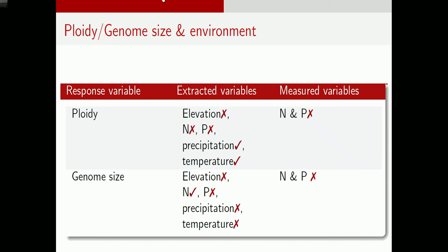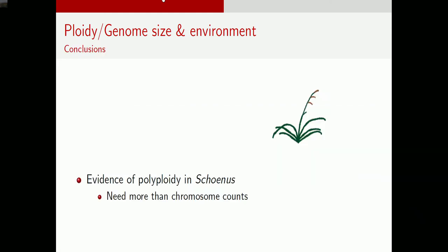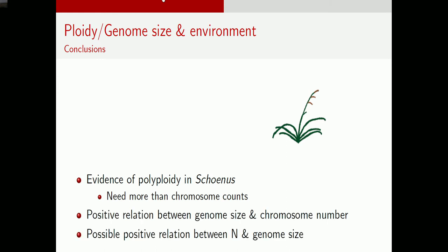I did find one relationship using genome size: a positive relationship with nitrogen. Species in my Southern African Schoenus dataset with larger genomes were associated with sites having more nitrogen. To summarize this part of the presentation: there is evidence of polyploidy in Schoenus but I need more than chromosome counts; there is a positive relationship between genome size and chromosome number; and there is a possible positive relationship between nitrogen and genome size.